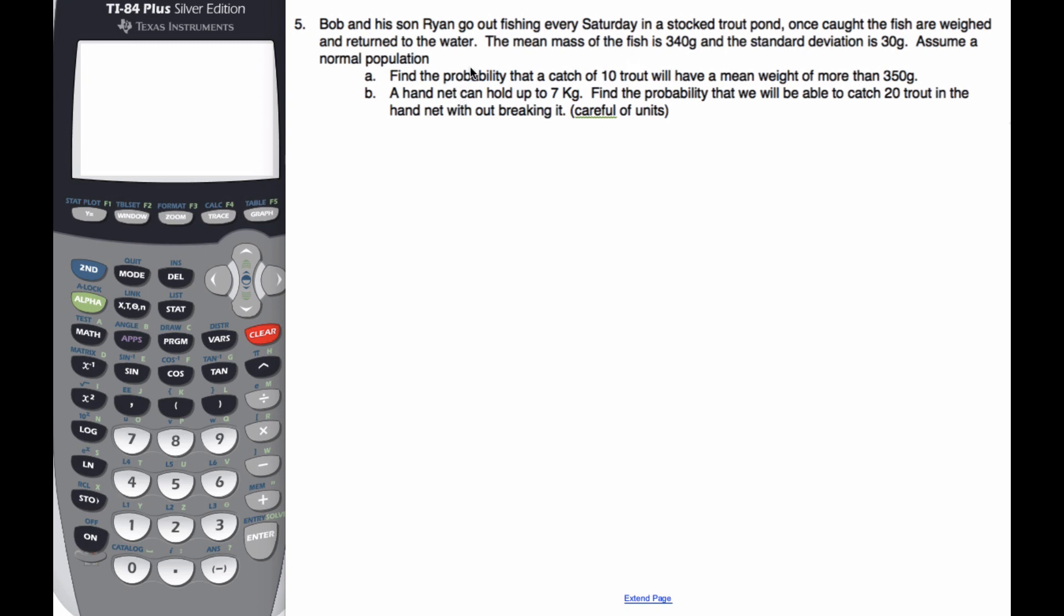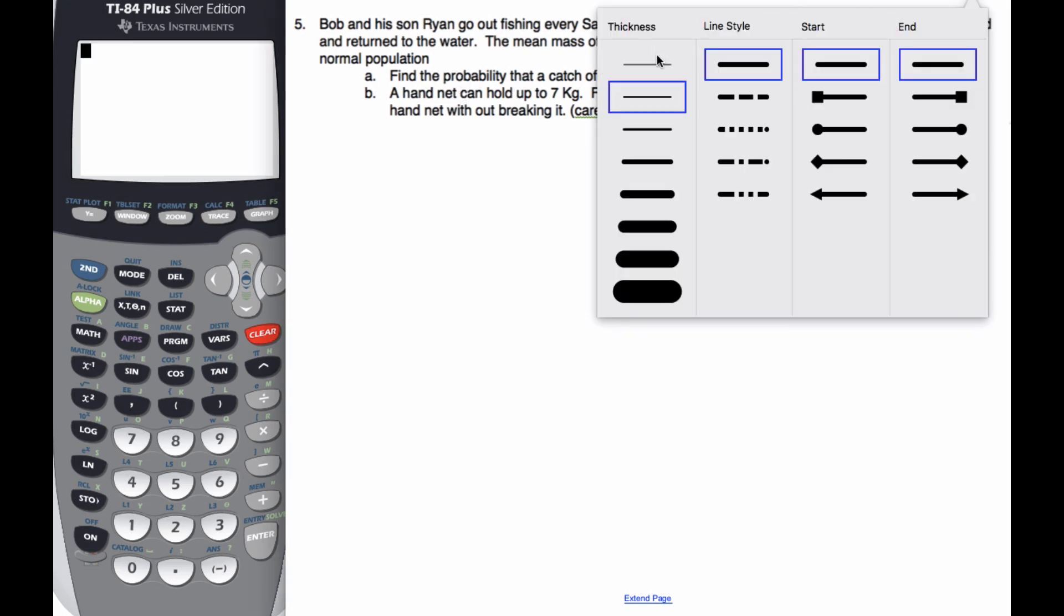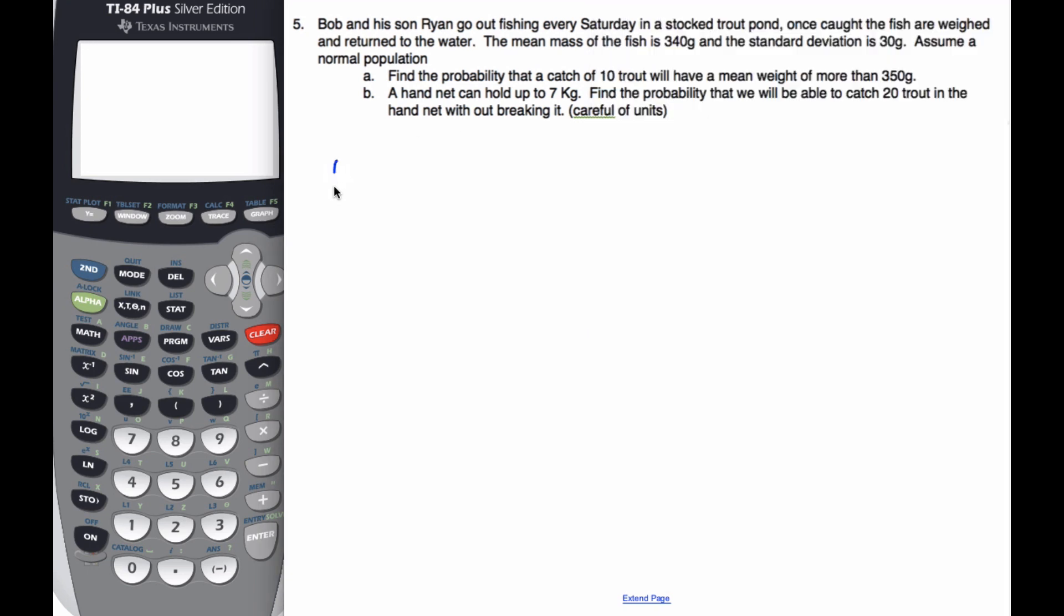Assume a normal population. So that means that my fish are normal with a mean of 340 and a standard deviation or variance of 30 squared. I want to find the probability that a catch of 10 trout, so n is equal to 10, my sample size is 10,